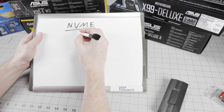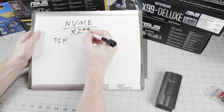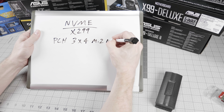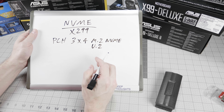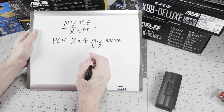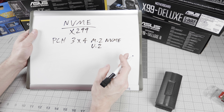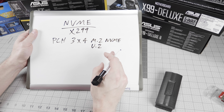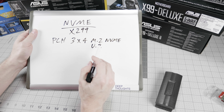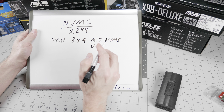On X299, the PCH — same as Z270 as I mentioned — supports three by four-lane M.2 NVMe or U.2. M.2 is the internal socket that gives you four lanes of PCI Express; U.2 is the cabled socket that also gives you four lanes of PCI Express. They are functionally identical and the motherboard doesn't know the difference. Depending on the motherboard vendor and available real estate after RGB lighting and so forth, they may go with multiple M.2 slots, multiple U.2 slots, or some combination. You can have three of these interfaces in combination and RAID them together.